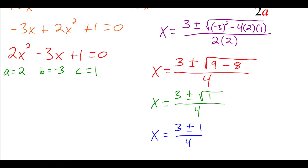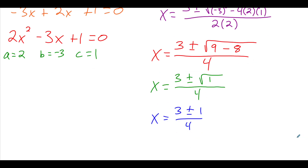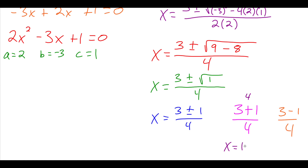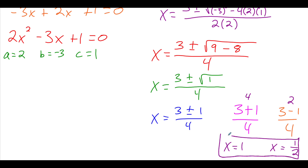Now I'm going to work on getting my two separate answers. So to get the first answer, I split this into 3 plus 1 over 4: 3 plus 1 is 4, and 4 divided by 4 is 1, so x equals 1 as my first answer. For the second answer, 3 minus 1 is 2, and 2 divided by 4 reduces to 1 half since both are divisible by 2. So my two answers are 1 and then 1 half.